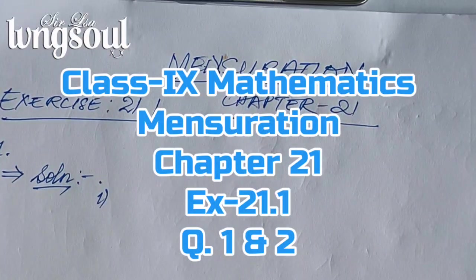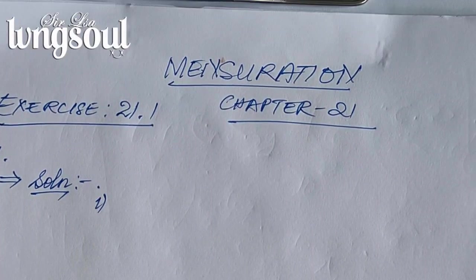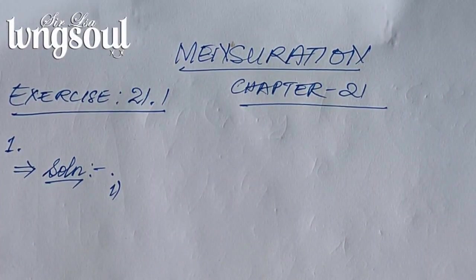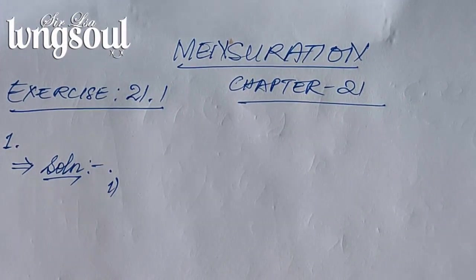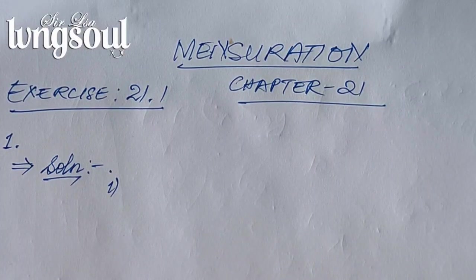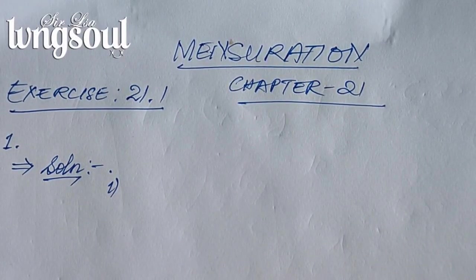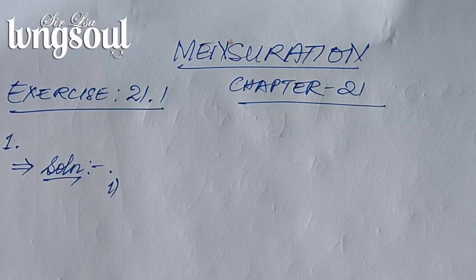Now in the middle of our demonstration on chapter one. Exercise 2.1, question number one, sub number one. Find the lateral surface area, the total surface area, and volume of the cuboid.